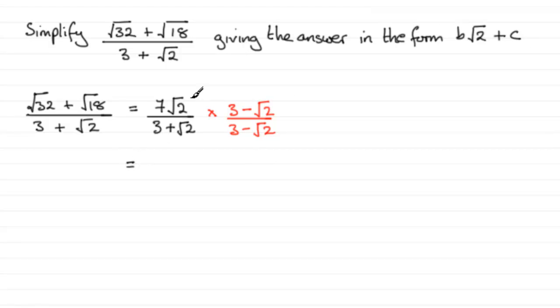So on the top, if we multiply 7 root 2 with the first term here, 3, we're going to get 21 root 2. And then 7 root 2 multiplied by minus root 2 is going to be minus, and we've got 7 times root 2 times root 2. Well, root 2 times root 2 is going to be 2. And then it will be 7 times 2, which is 14.